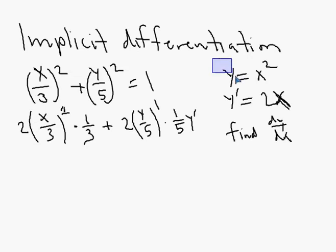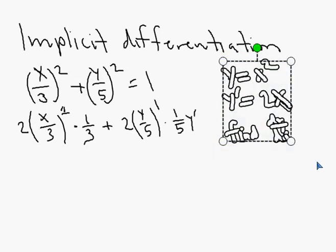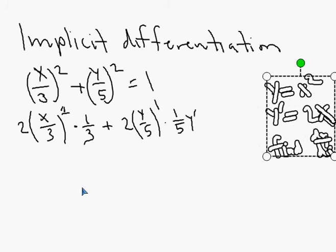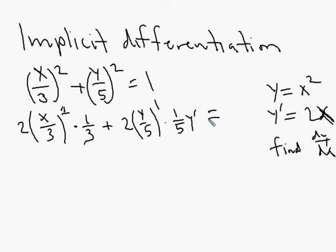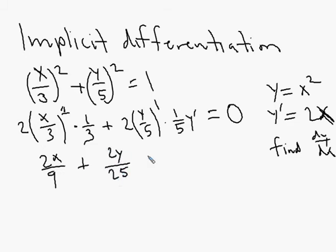Then we set it equal to the right side. The derivative of 1 is 0. This simplifies: we get 2x/9 because the 3s multiply, plus (2y/25)·y' = 0. We were asked to find dy/dx, so we want to solve for y prime.